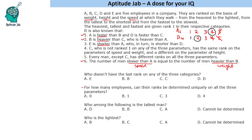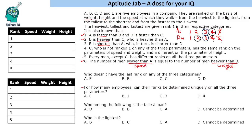So one valid case is: one person heavier than B and one person slower than A — meaning B is second in weight and A is fourth in speed. The second case is both ranked third: B is third in weight and A is third in speed. B ranked fourth or fifth in weight is not possible. So we take these two cases and fill in the conditions.